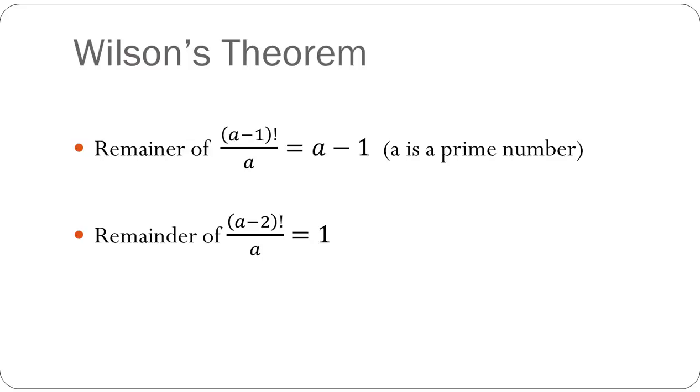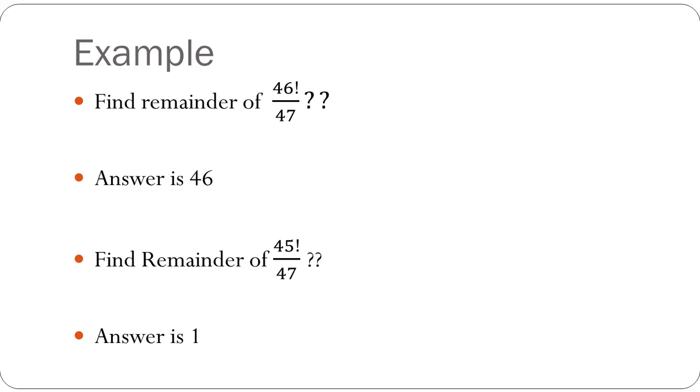Let's look at a few examples to clarify the theorem better. Suppose you're asked to find the remainder of 46! upon 47. And if you assume 47 to be a, then 46 is a-1.